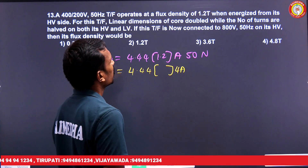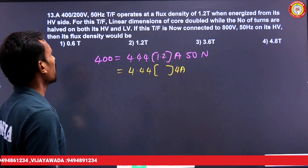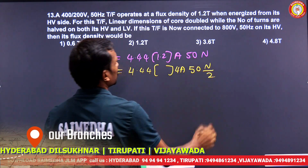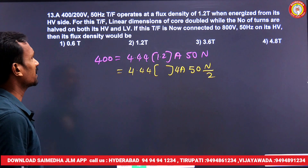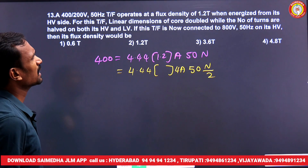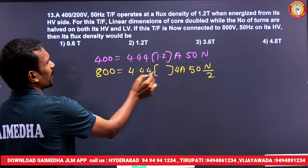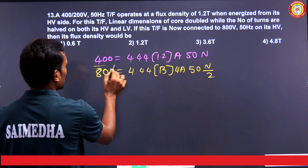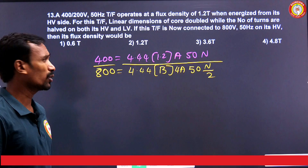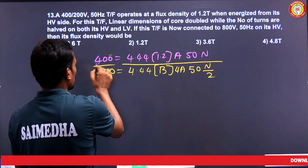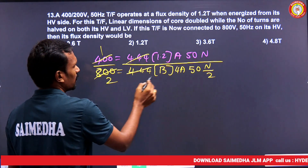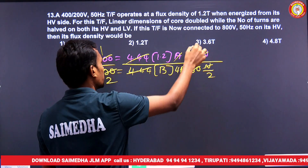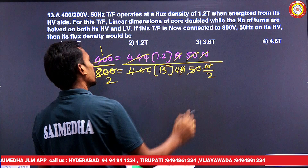When the linear dimensions are doubled, the area becomes four times, and the number of turns are halved on both sides — HV and LV. The transformer is now connected to 800 volts, 50 Hz. To find the new flux density, substituting into the formula and cancelling common terms.